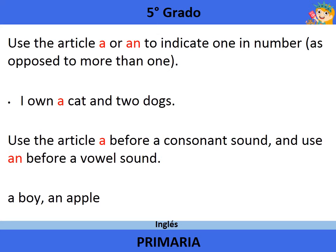In addition to this, use the article A or AN to indicate one in number, as opposed to more than one. Example: I owned a cat and two dogs.